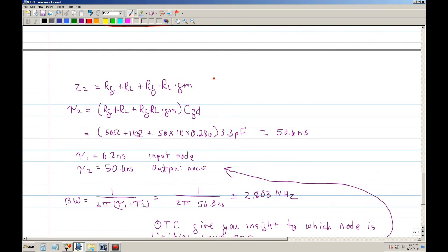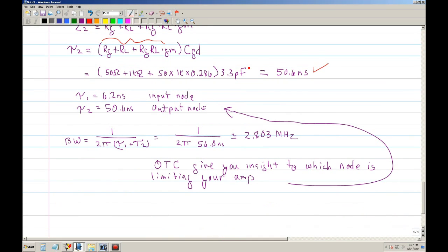Here is the impedance, this is the equation. Now tau2 is this impedance times the Miller cap, which is CGD. When you plug in the numbers, you end up with 50.6 nanoseconds. So now this is the time constant at the output node.